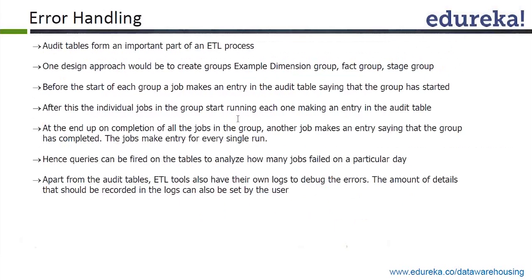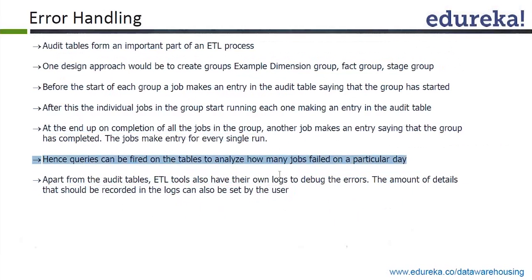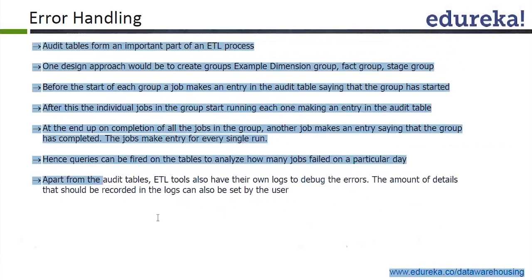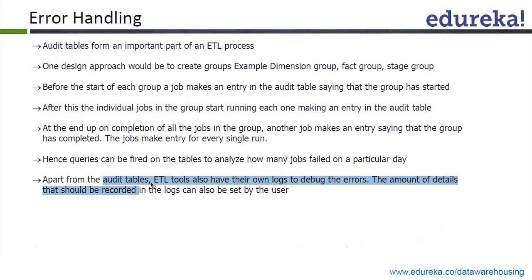These control tables can also store data about which jobs are still running and whether they are completed or still running. What if some extraction took too long and it's still running when the next load starts — it's not finished yet? All these status tables help you to monitor and run your ETL process in a sequential manner and do error handling properly. These audit tables can also be used to monitor your ETL jobs which ran on a particular day and whether they finished or not. ETL tools also have their own logs to debug errors, apart from these audit tables.